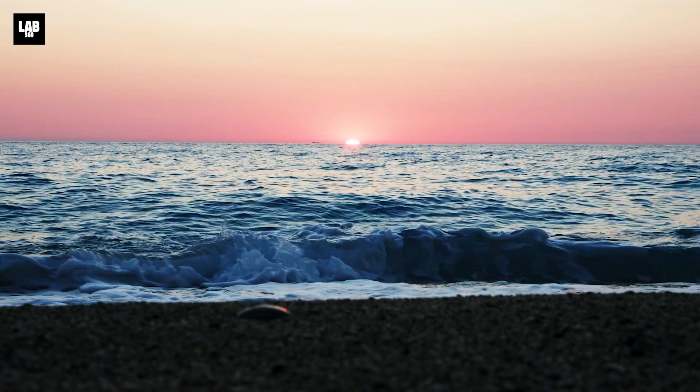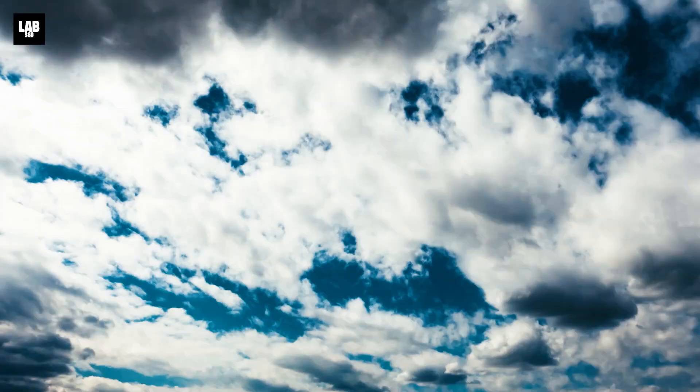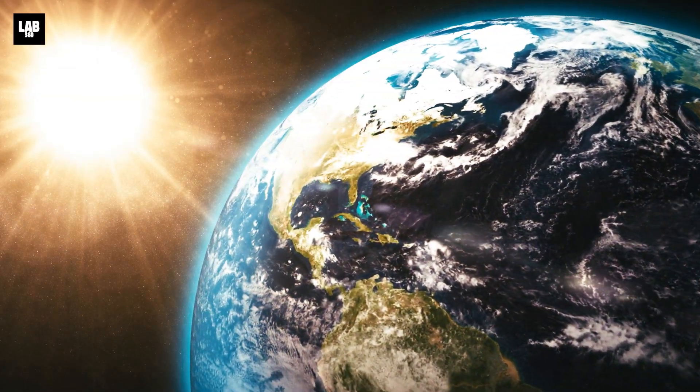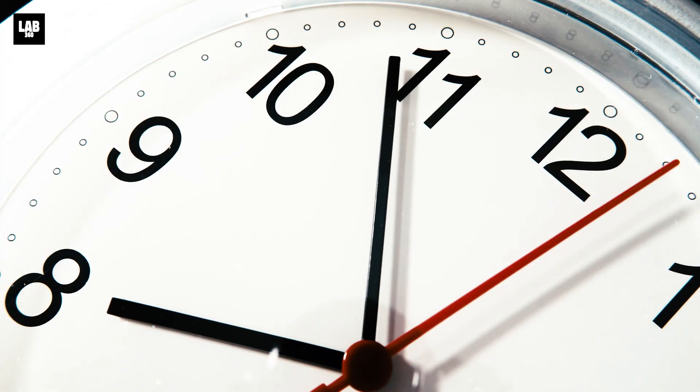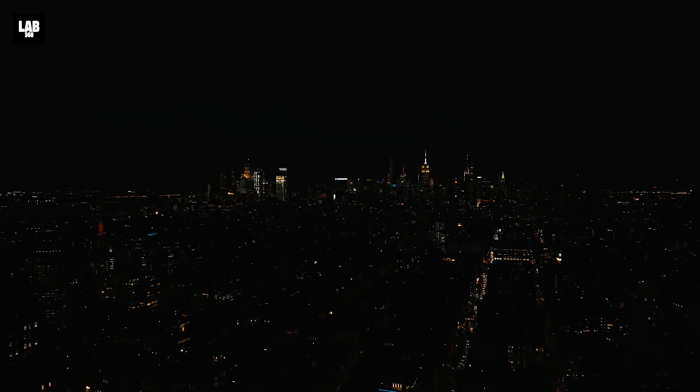If the sun disappeared right now, we wouldn't even know it for a while at least, because it takes sunlight about 8 minutes and 20 seconds to travel to Earth. For those 8 minutes, life would continue as normal, but then everything would change.